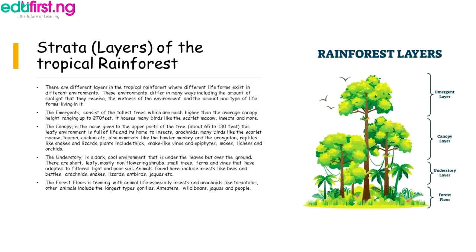The emergent layer consists of the tallest trees, which are much higher than the average canopy height, reaching up to 270 feet. It houses many birds like the scarlet macaw, insects, and more. The canopy is the name given to the upper part of the tree, about 65 to 130 feet.